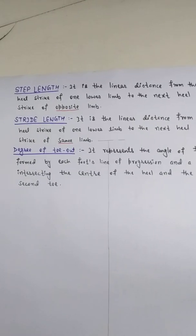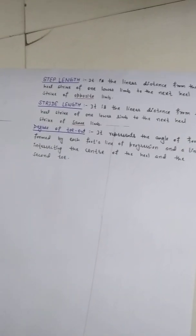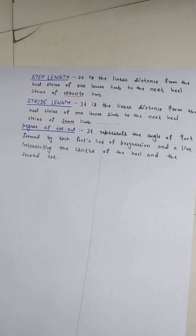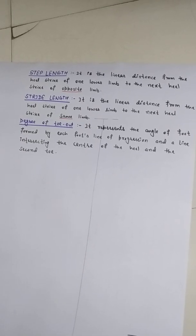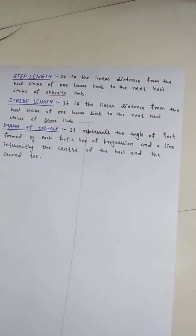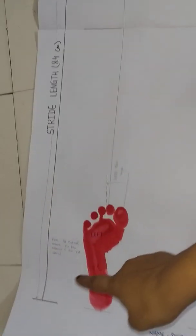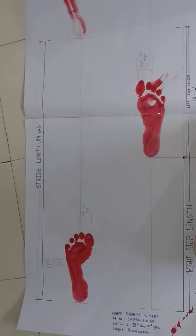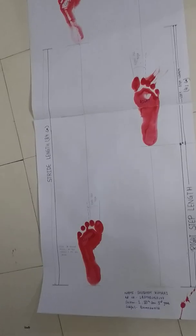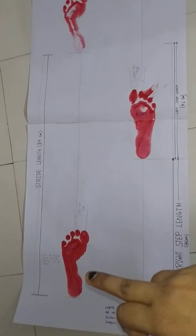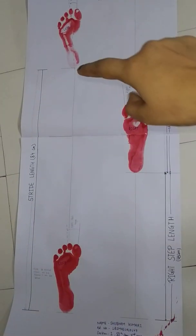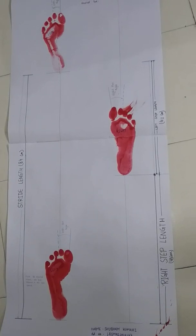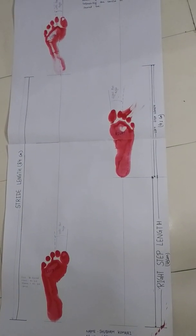In step length we take the left as well as right heel, but in stride length we take the left heel and then the left heel again. The heel of the first left foot and again the heel of the left is the stride length. This diagram clearly shows what is stride length and what is step length.